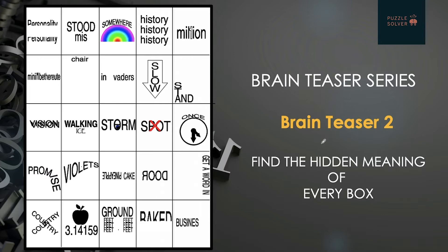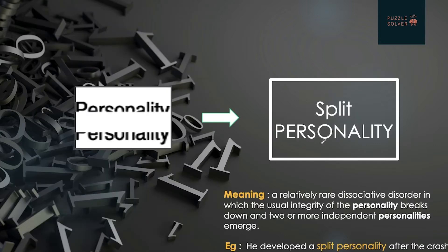I hope you all must have identified the maximum number of hidden words. Let's proceed to see all the hidden words. First, as I already told you, 'personality' is split from the middle, so it would be 'split personality'. I've written the meaning and how it can be used in a sentence — you can refer to that section.